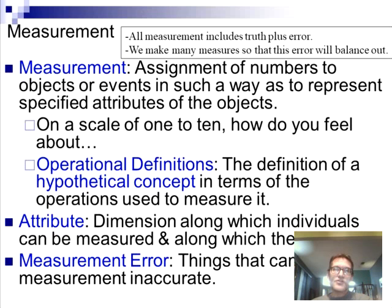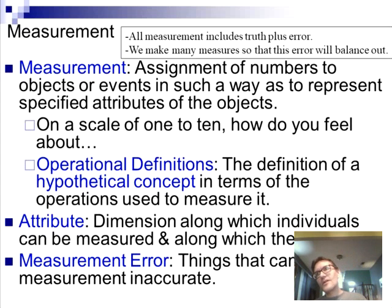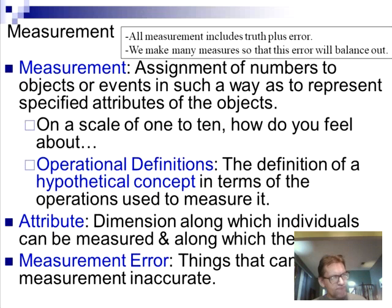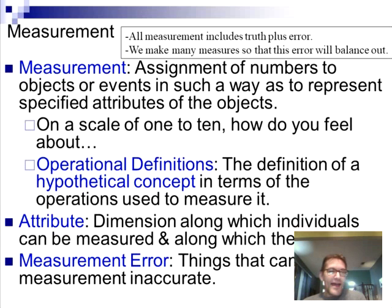Hypothetical constructs are like love — let's pick a different one — happiness. Happiness is a hypothetical construct. It's imaginary, it's made up, it doesn't exist. Can I have one cup of happiness? One foot, one liter, one gram of happiness? No. You can't get a meter, liter, or gram of happiness because it does not exist.